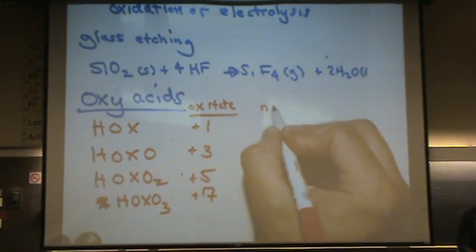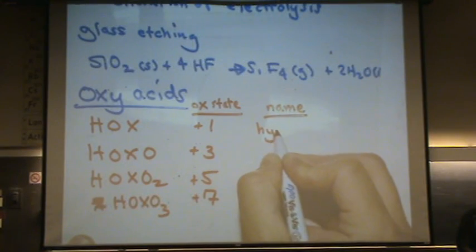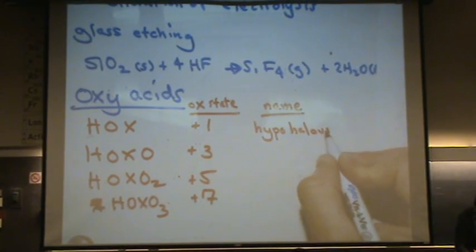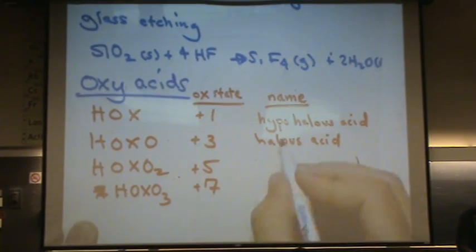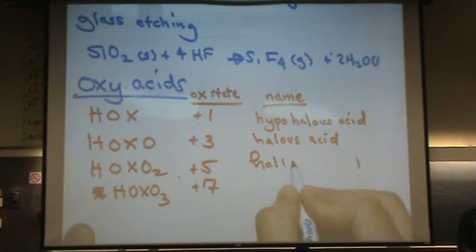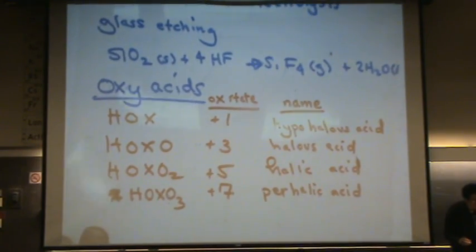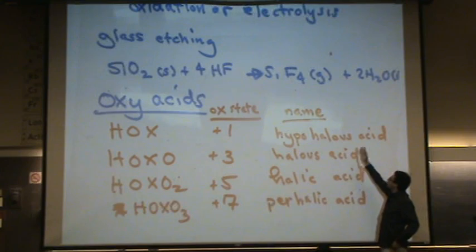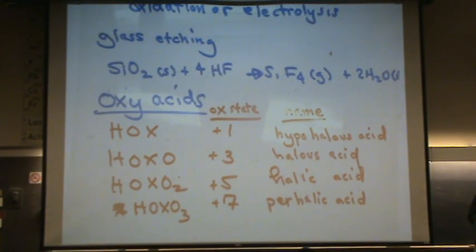This would be, what's the name of these? The name here would be hypo halos. I'll just use hal for halogen. Halos acid. We've got halos acid for the next one. What would this one be? Halic acid. And what's the prefix for the last one? Perhalic. So you learned these before, you might have forgot, but there they are again. Okay. So for example, if x was chlorine, it'd be hypo chlorous acid, chlorous acid, chloric acid, and perchloric acid, whatever the halogen precinct or root stem name is.